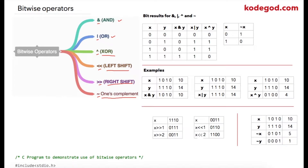Now let us see how bitwise operations are performed. In the first table we are going to check bit results for AND, OR, XOR, and one's complement. If we have two bits x and y, these are all the possible values. For the AND operator: zero AND zero gives zero, zero AND one gives zero, one AND zero gives zero, and only when both x and y are one do we get one. For the OR operator, when both bits are zero we get zero, otherwise we get one.